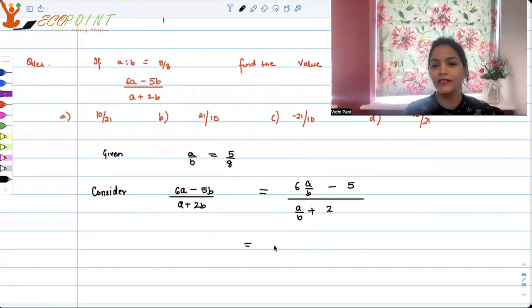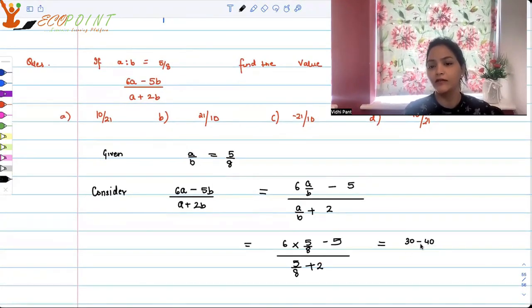Once we have this, it's very simple. So all we have to do is just put the value of a by b, which is 5 by 8. So you get 6 into 5 by 8 minus 5, again 5 by 8 plus 2. So this will give you 30 upon 8, that is 30 minus 40 upon 8, upon 5 plus 16 upon 8.